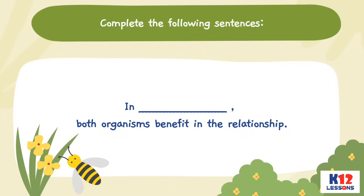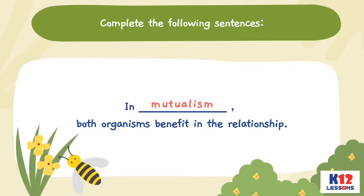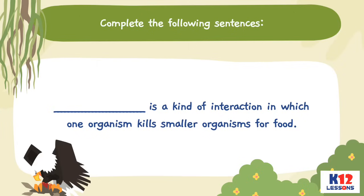In blank, both organisms benefit in the relationship. Blank is a kind of interaction in which one organism kills smaller organisms for food.